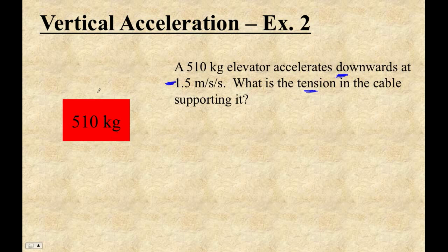Okay, so the forces acting on it are the force of gravity, which is the weight. Weight is M times g, so mass times 9.8. So 510 times 9.8, that's going to be 4,998 newtons in the downward direction.